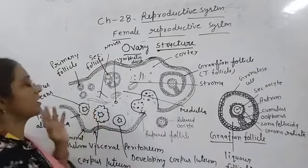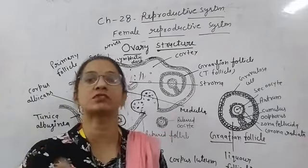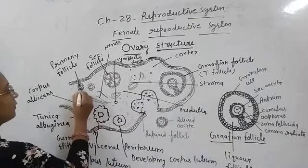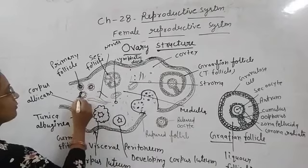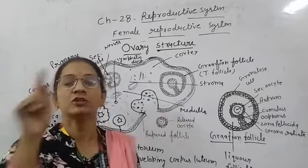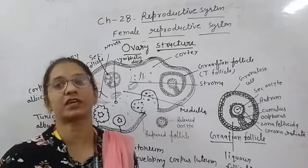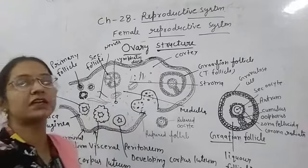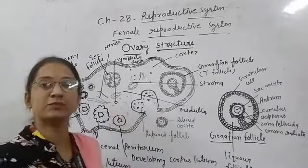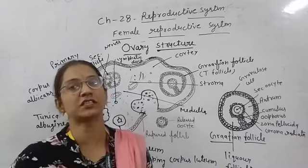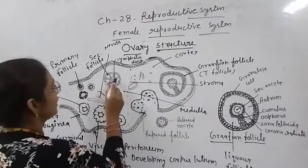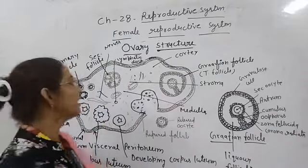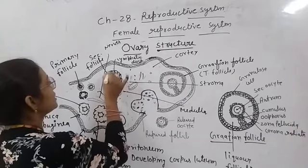Oogonia cells can change into primary oocytes. The cells that cover the primary oocyte are known as follicle cells or granulosa cells. These granulosa cells provide nutrients to the primary oocyte. As the follicle develops, small cavities appear between the granulosa cells; at this stage it is called a secondary follicle.